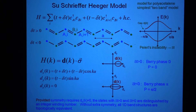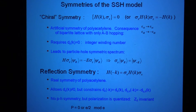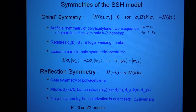Let me just digress for a minute to talk about the symmetries that polyacetylene has, because it has two kinds of interesting symmetries. The first one is actually kind of an artificial symmetry, though it's a symmetry which is very useful to think about, and something that we're going to come back to a few more times later on.